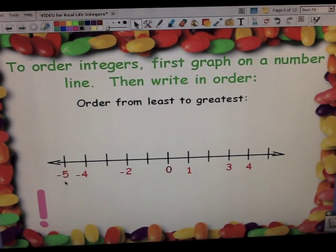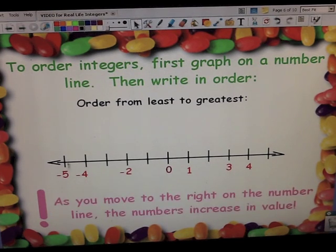So now we have our integers ordered from least to greatest. One thing to remember is that as you move to the right on your number line, the numbers increase in value, which we're used to. 0, 1, 2, 3, 4. The same holds true for negatives. Negative 5 is less than negative 4. Negative 4 is less than negative 2.